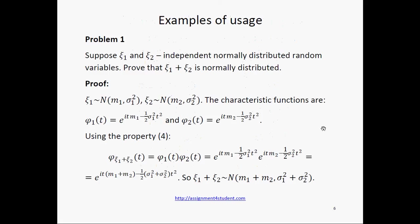Using the property about characteristic function of a sum, we get the following results. Phi of xi1 plus xi2 equals the product of phi1 and phi2. After substitution and simplifying, we get the following result.